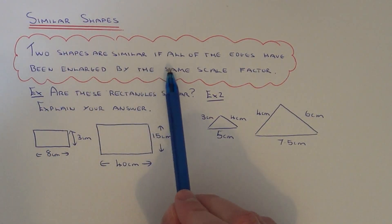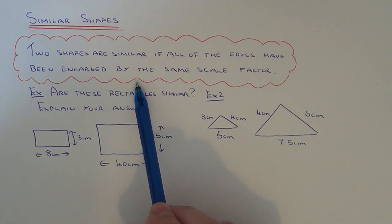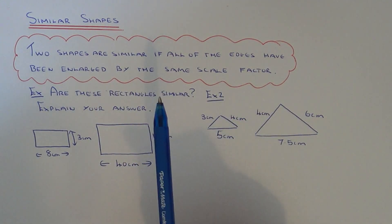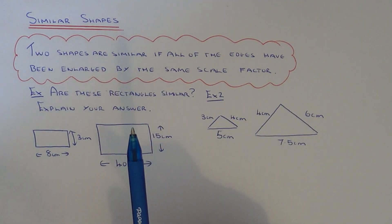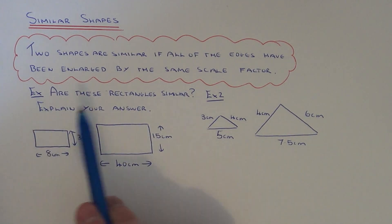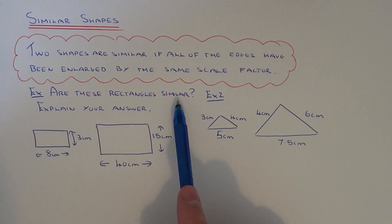Two shapes are similar if all the edges have been enlarged by the same scale factor. Basically, similar shapes are shapes which have been enlarged. Let's have a look at the two examples here. We've got to decide if the shapes are similar and if they are, we've got to explain the answer.